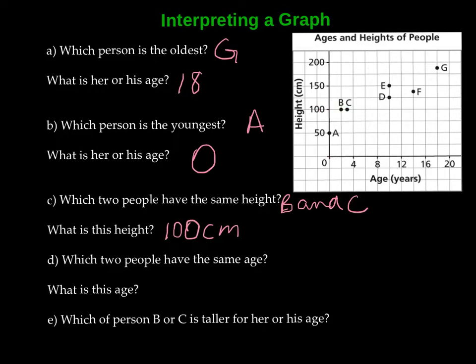Which two people have the same age? Okay, so we're going to look to see which two dots are right above each other. So E and D are above and below each other, and they are the same age. We go down to right there and it tells us how old they are. So these folks are, so we've got D and E and they are 10 years old.